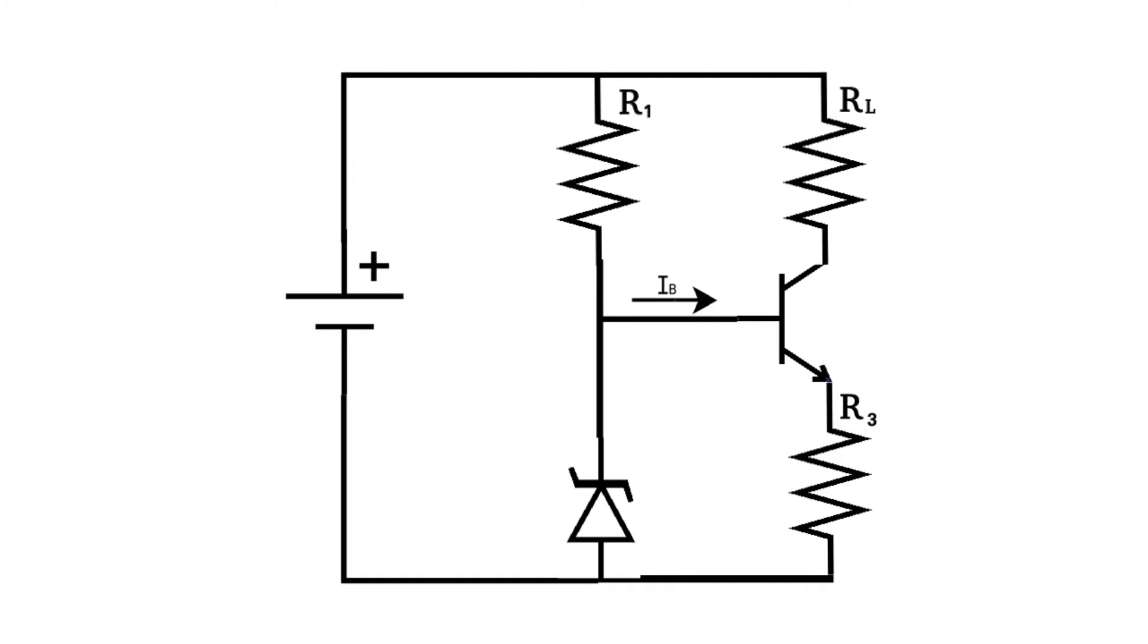The output current is calculated as the ratio between the Zener voltage, diminished by VBE, and the value of resistor R3. Although this circuit is a definite improvement from the single transistor circuit, we can still see some current drift due to the temperature changes of R3 and especially the transistor itself.